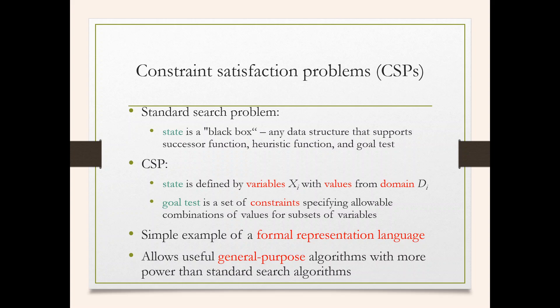In the standard search problem, there is no particular definition or representation of the state — it is taken as a black box. But in the CSP, the state is defined by variables Xi with values from domain Di. The goal test is a set of constraints specifying allowable combinations of values for subsets of variables. This simple formal representation language allows useful general-purpose algorithms with more power than standard search algorithms.